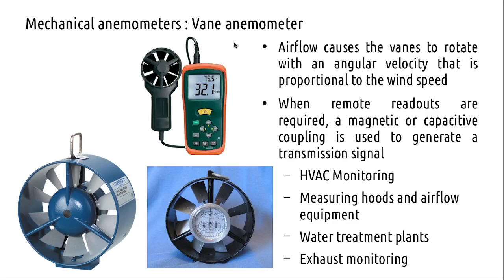Mechanical vane type anemometers can be handle type or placed in ducts. The duct version looks like an exhaust fan but is powered by the air flow through the duct where it is placed. A remote readout is possible by using magnetic or capacitive sensors to convert rotation into a proportional electrical signal corresponding to the velocity.